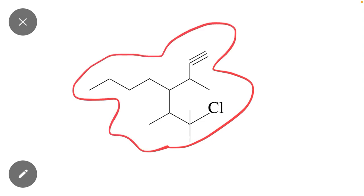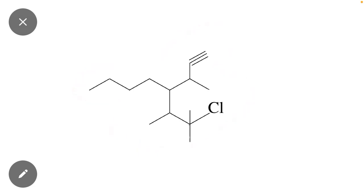First of all, keep in mind we will select the longest chain which contains the multiple bond - double bond or triple bond. Here if we select this chain, it contains a triple bond. That is why we will select this chain and this is the substituent present. Now we will start numbering from the triple bond side.